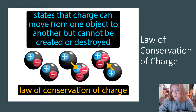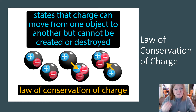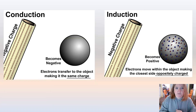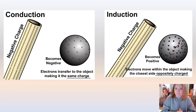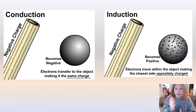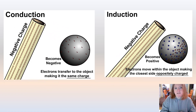And then we have the law of conservation of charge. It states that charge can move from one object to another, but it can't be created or destroyed. This is going to become really important when we do nuclear chemistry, but I want to touch on it now because we're talking about all the laws. You can see charges moving around, but the total charge stays the same.